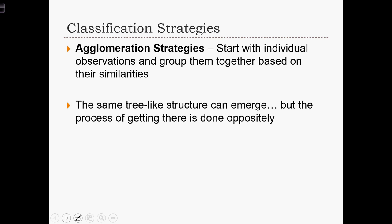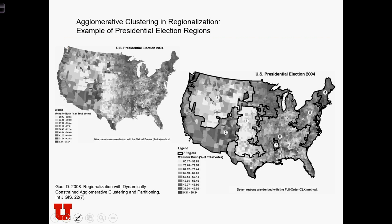Another type of classification strategy is called an agglomeration strategy. Here we start with individual observations and decide to group those observations based on their similarities — based on how similar two observations are. We will form some kind of tree, but the process of getting there is different. This is typically done using complex clustering algorithms. Here's an example using voting data from the 2004 presidential election.